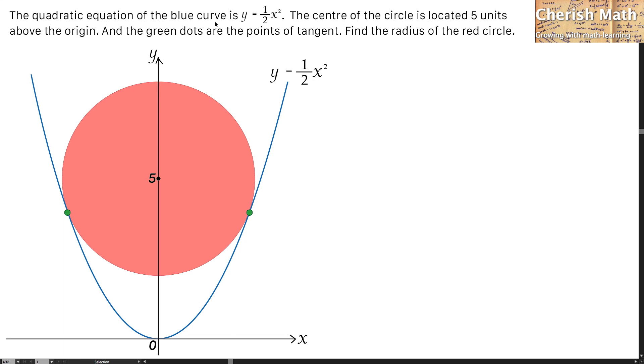The quadratic equation of the blue curve is y equals one-half x squared. The center of the circle is located 5 units above the origin, and the green dots are the points of tangent. Find the radius of the red circle.